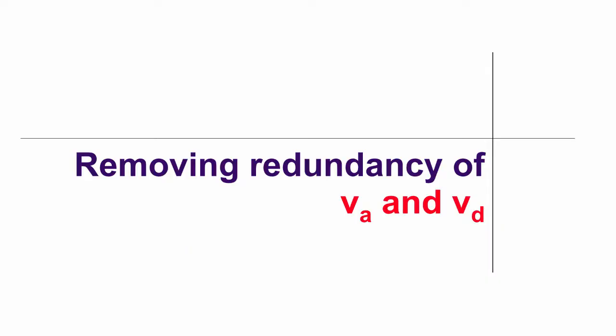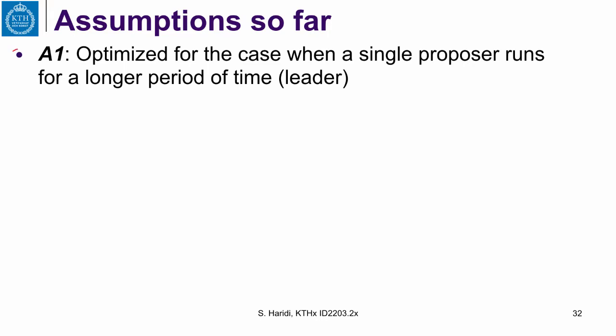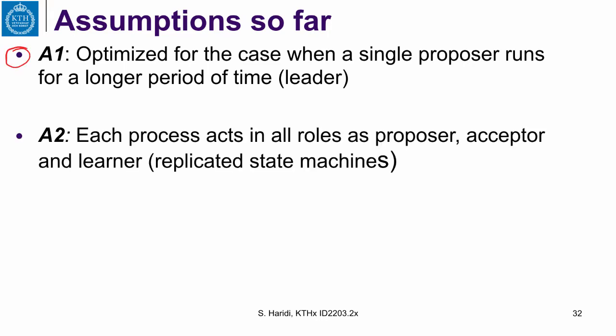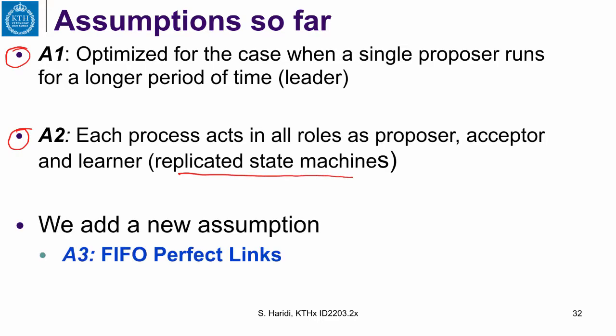Now we look at removing the redundancy between the accepted sequence and the decided sequence. So here is our assumptions so far. The algorithm is optimized for a single leader proposer. Number two, each process acts in all roles as acceptor, learner, and proposer, and that is what we call the replicated state machine assumption. And now we add one more assumption, and this assumption is using a perfect FIFO link.